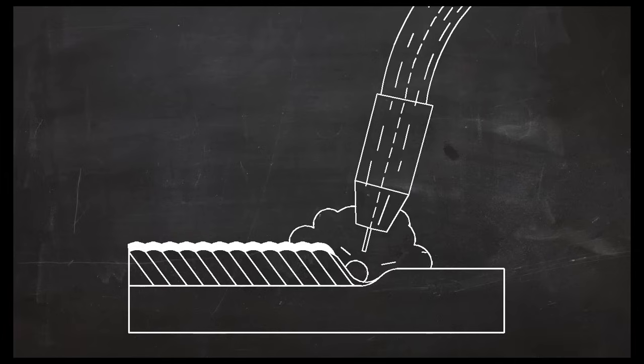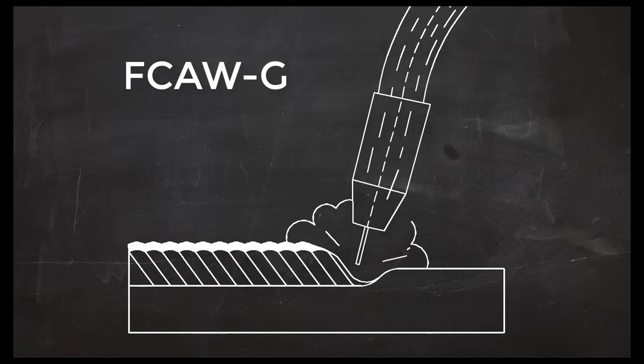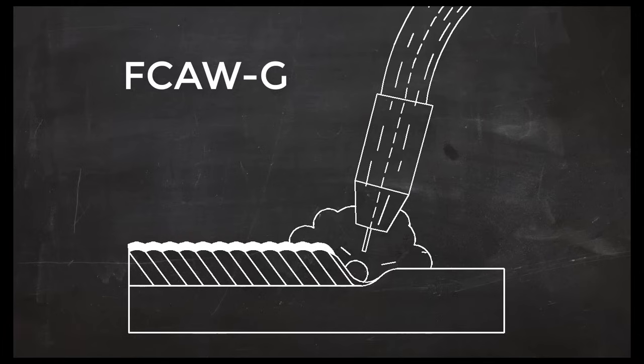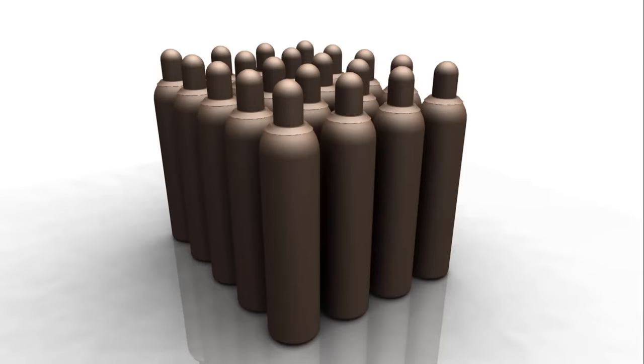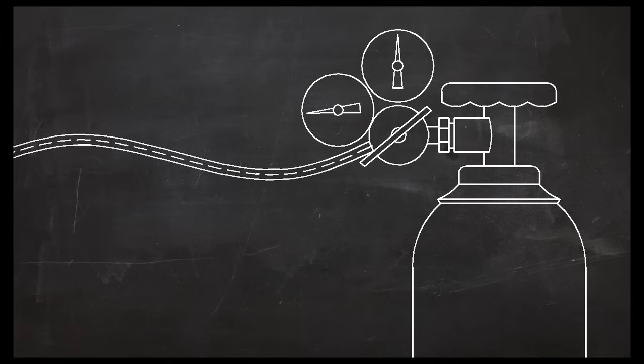Electrodes designed to be gas-shielded rely on a secondary shielding gas to do the job of protecting the molten weld. The high-pressure gas cylinders used for this process are of the same design as those used in MIG or TIG welding. These cylinders contain gas under extremely high pressure, and a device called a regulator brings the gas to a usable pressure.